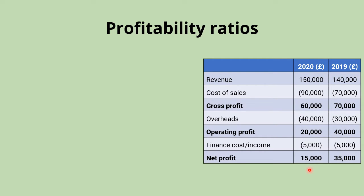If it's a very small business just starting up, then that's not too bad a figure for profit. Whereas if it's a huge multinational company, then that would be pretty disastrous to be only making £15,000 profit. So what we then do is look at the profitability of the business — how effective a business is at making a profit relative to its size — and then we can start to make clearer comparisons between different businesses.